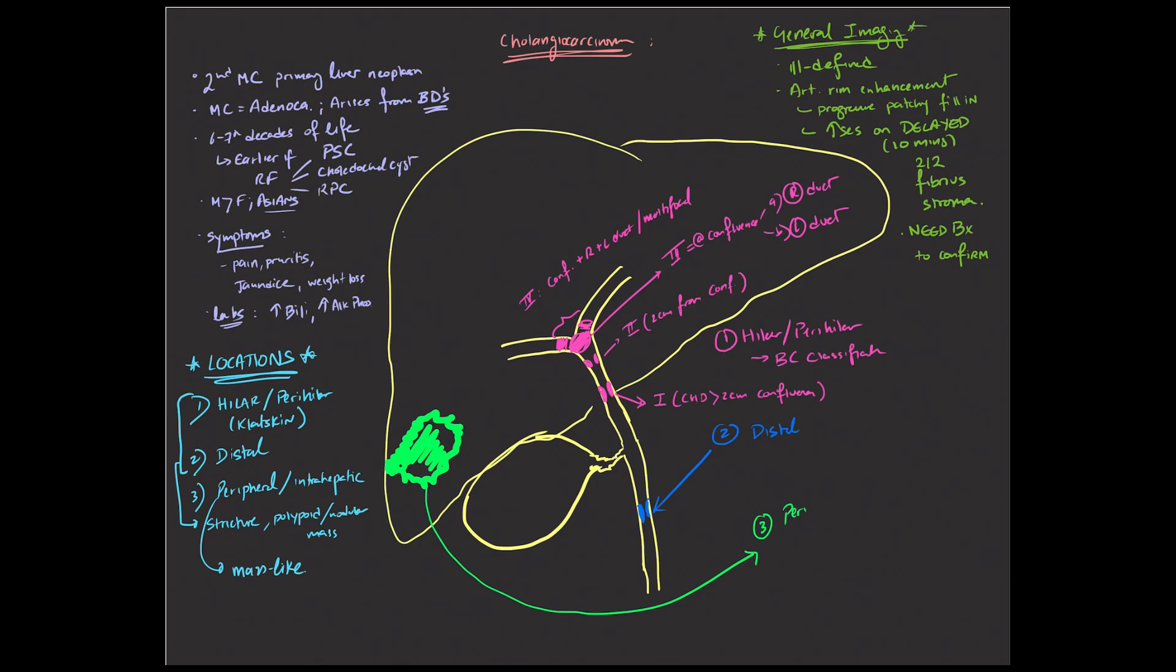These tend to have more ill-defined borders, and particularly when they're abutting the capsule or next to the capsule can result in capsular retraction, which is something one should look out for. There's focal indentation of the capsule towards the lesion. And this can also be associated, depending on where the location is, with the dilatation of the ducts upstream from this region.